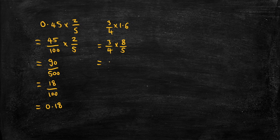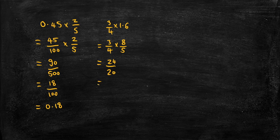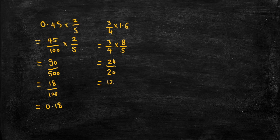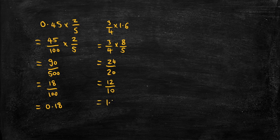And then multiply the numerators to get 24. Multiply the denominators to get 20. And then let's simplify. So common factor of 2 again. So 12 over 10. So as a decimal that's 1.2.